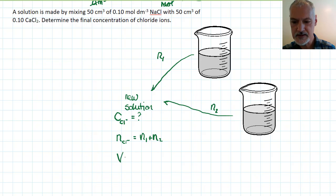The final volume of my solution, I'm going to be mixing these two volumes together. If there's 50 cubic centimeters here and 50 cubic centimeters here, my final volume then is going to be 100 cubic centimeters, which I might as well put directly into decimeters cubed by dividing by 1000. So that's my volume.